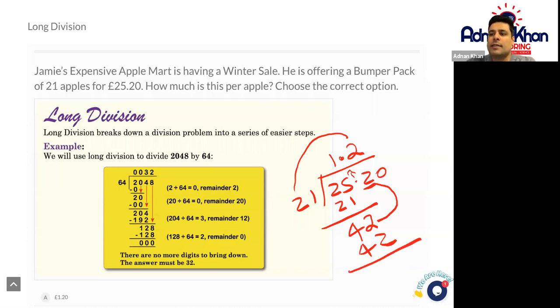And we only have the last zero remaining here. What do we do with that zero? Well, that zero can just come up here to make one pound and 20 pence. So per apple, the cost will be one pound and 20 pence.